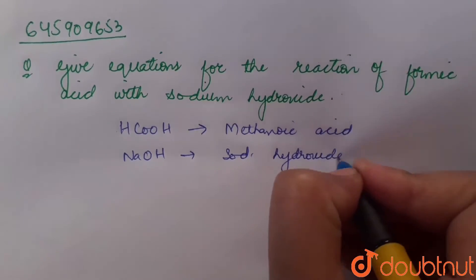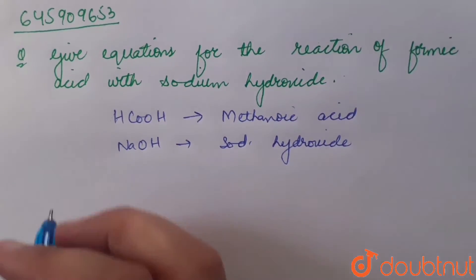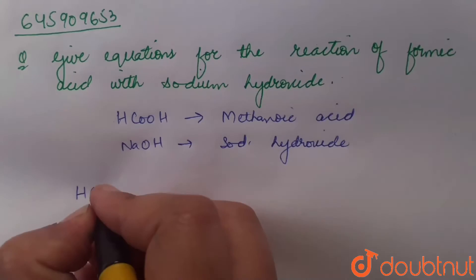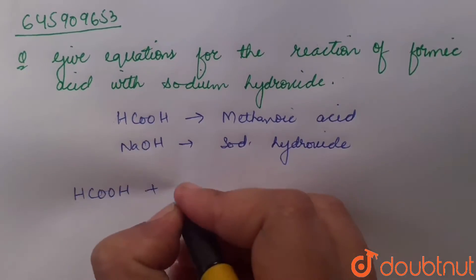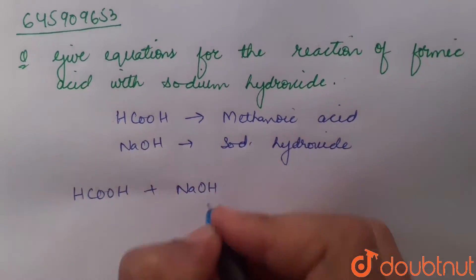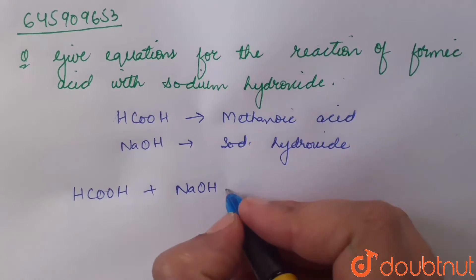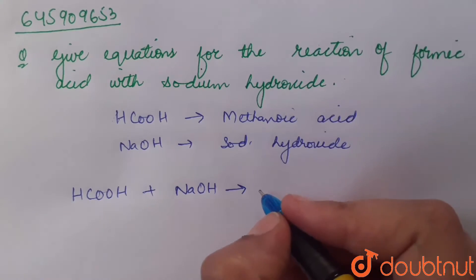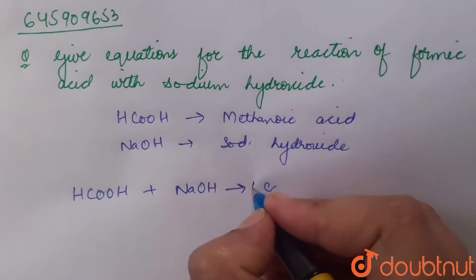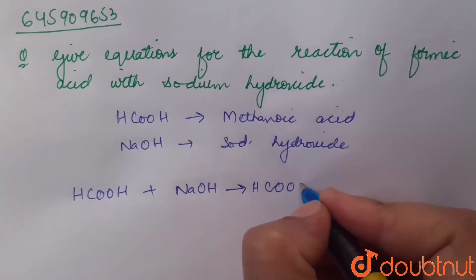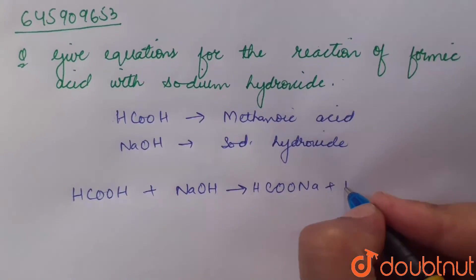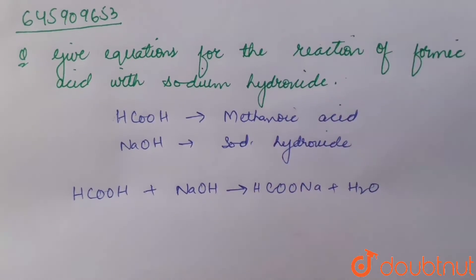Now when formic acid HCOOH reacts with sodium hydroxide NaOH, they undergo neutralization reaction and form sodium ethanoate, HCOONa, along with water molecules. This is neutralization reaction.